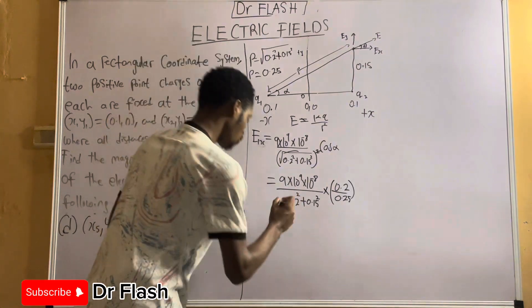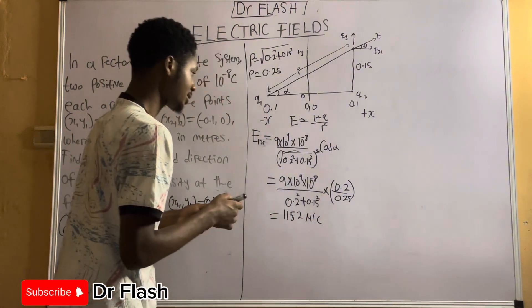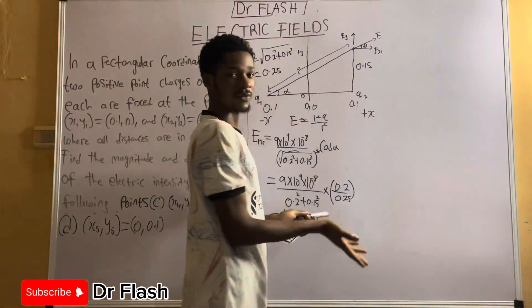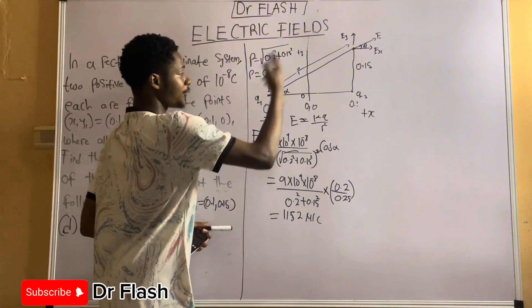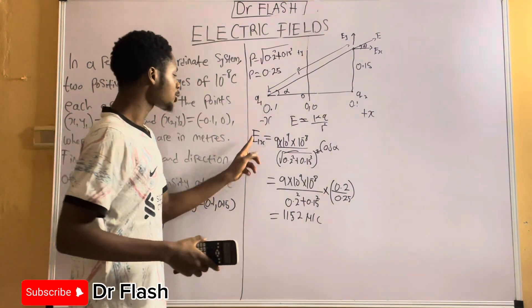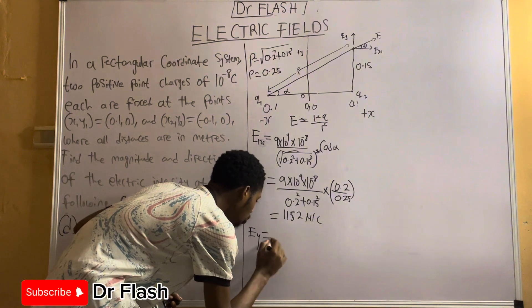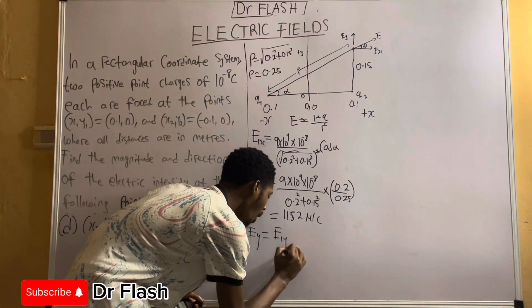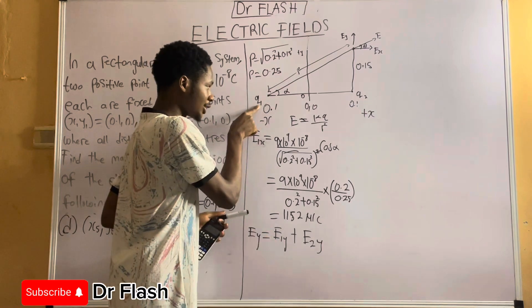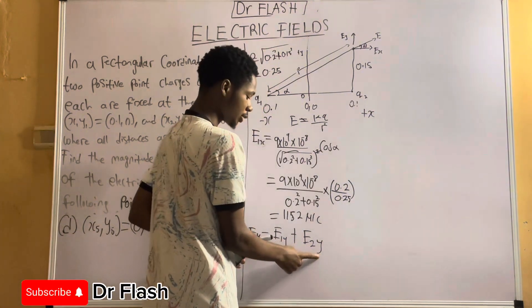Now we check charge q2. This one only has an electric field directed upward — there is no inclination, so there is no x-axis component, only a y-axis component. This means for the total system, the horizontal electric field Ex equals 1152 N/C from q1 only. To find the total Ey, we write Ey = E1y + E2y — the y-component from charge 1 plus the y-component from charge 2.